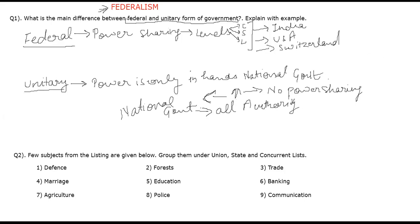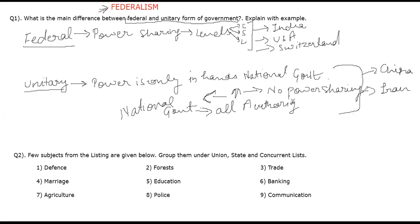Every decision is carried out by the national government, or we can say the central government. Examples of countries that follow unitary government: first is China, where the central government has all the powers; then Iran. These are some countries where power is not shared and the central government holds every power. So this was the answer to our first question.